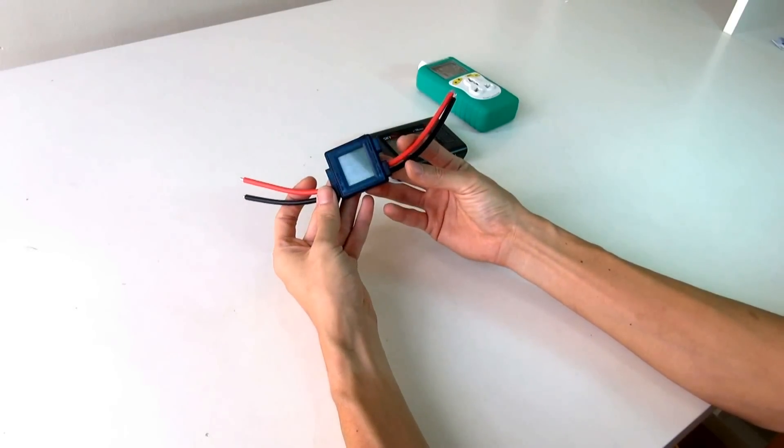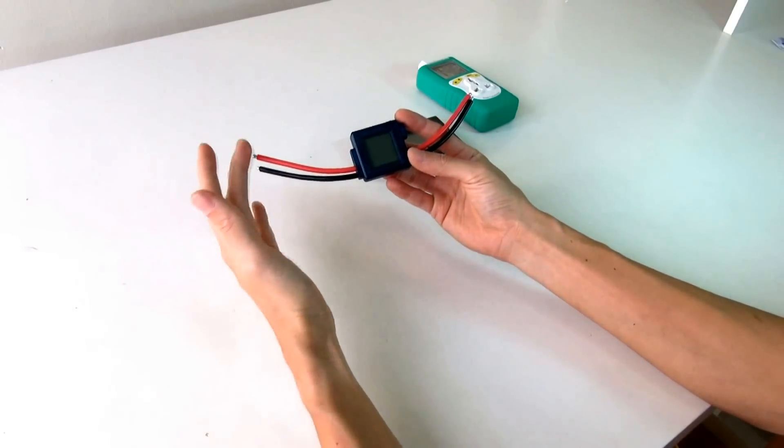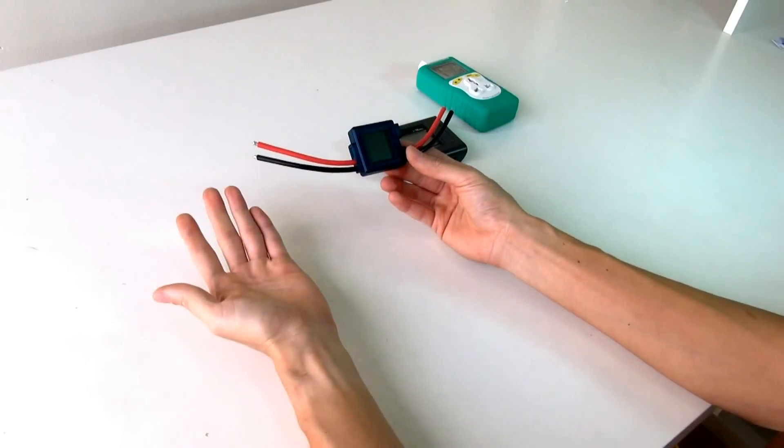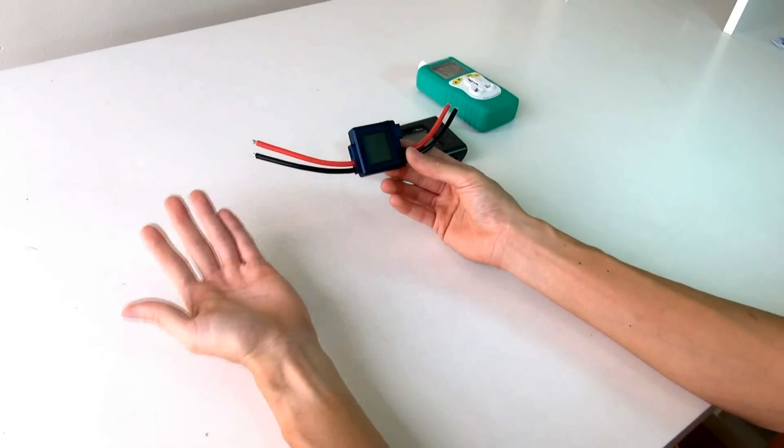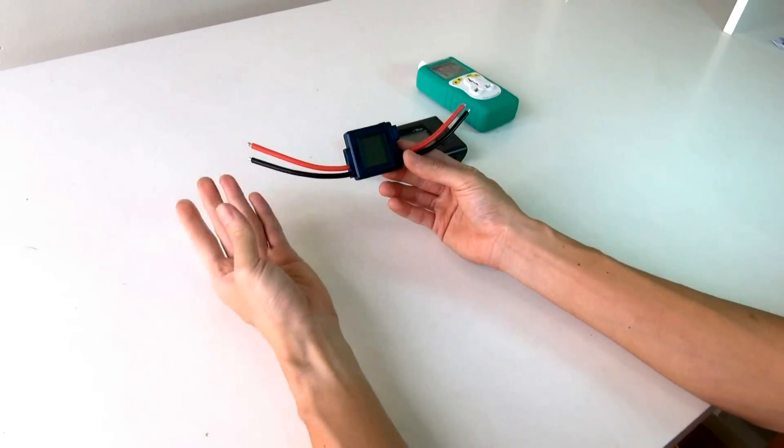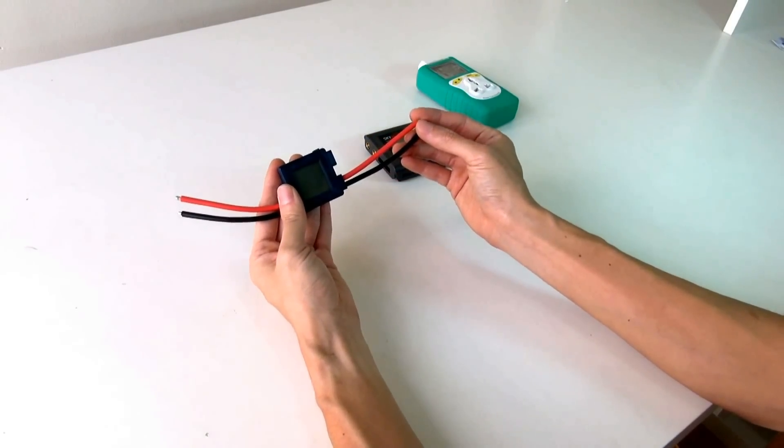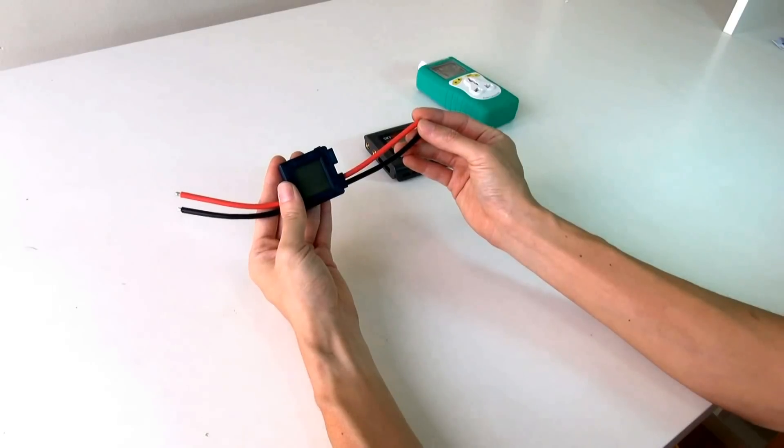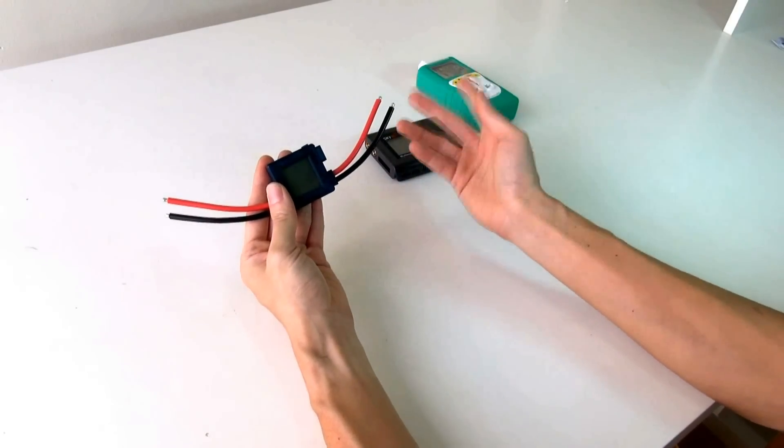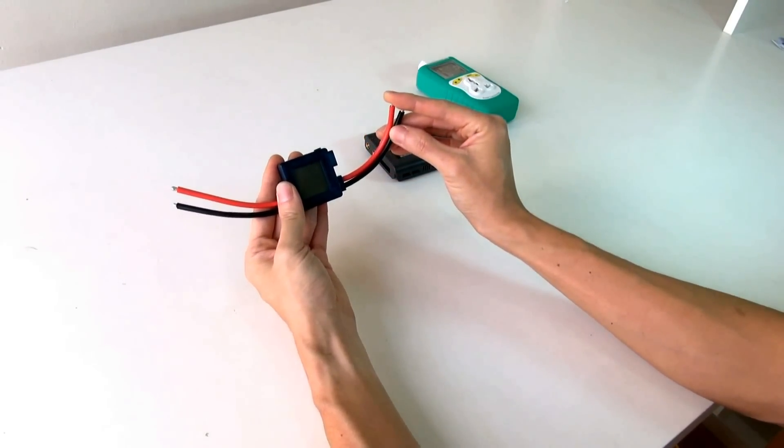A watt meter, basically, this design is quite simple. This is positive-negative, which is the source, and this is the load. For example, you want to connect to a solar panel. You connect the positive-negative to the source, and then this one you can connect to the, let's say you want to measure how much power is produced before it goes inside to the solar charge controller. This one, you can directly connect to the solar charge controller.